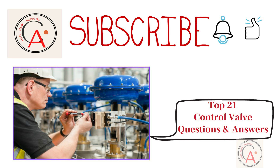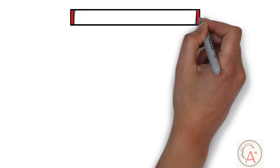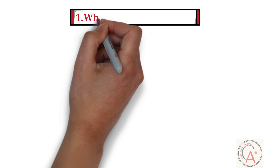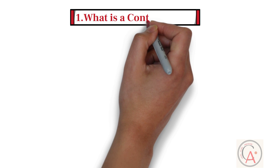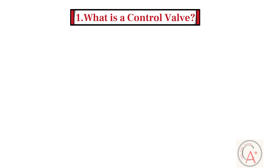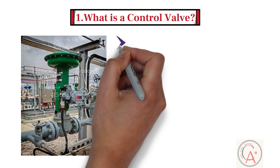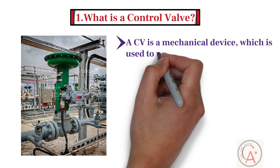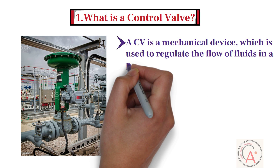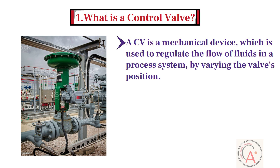Let's go to the first question: what is a control valve? A control valve is a mechanical device which is used to regulate the flow of fluids in a process system by varying the valve's position. The amount of fluid that passes through the valve can be adjusted to control the system's output.